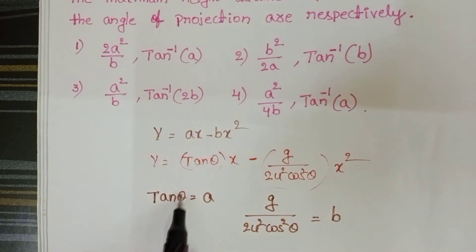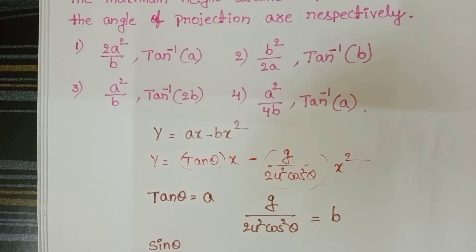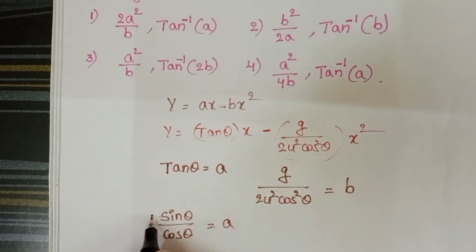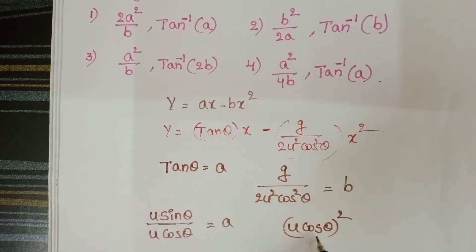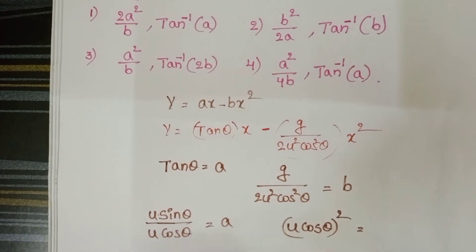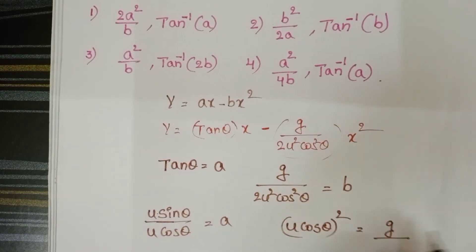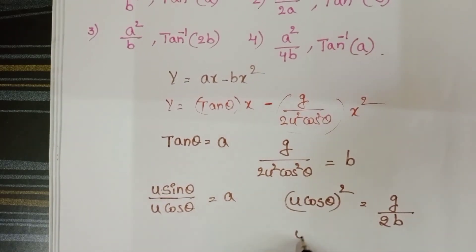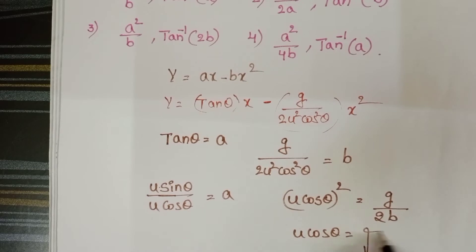From tanθ = a, we write sinθ/cosθ = a, i.e., (u·sinθ)/(u·cosθ) = a. From g/(2u²cos²θ) = b, we get u²cos²θ = g/(2b), so u·cosθ = √(g/2b).